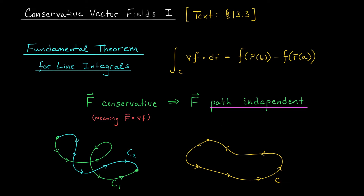Hey there folks, and welcome back. In our last lesson, we introduced a beautiful new result called the Fundamental Theorem for Line Integrals. This gives us an easy way to evaluate line integrals of gradient fields, provided that we know a potential function, little f. It says that the line integral along a curve C is simply f at the end point of the curve, minus f at the starting point of the curve.